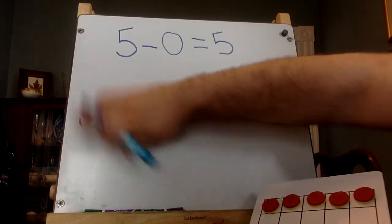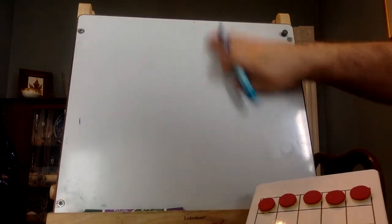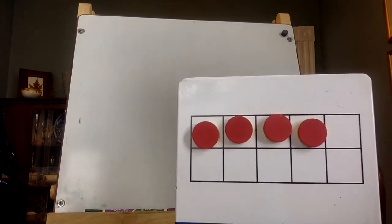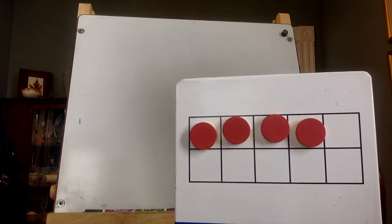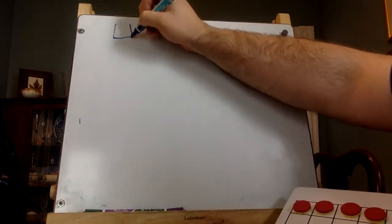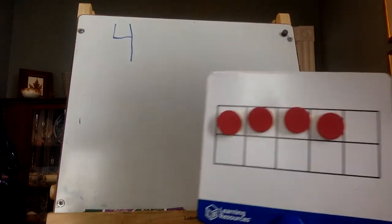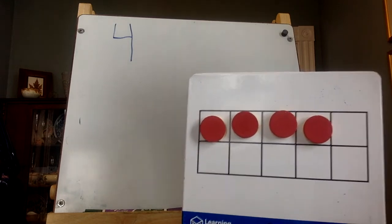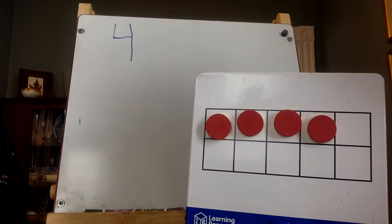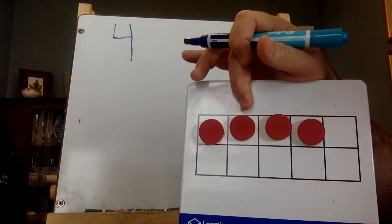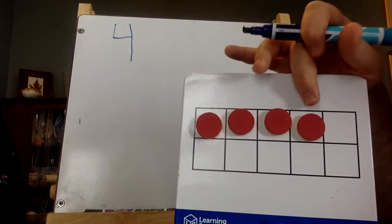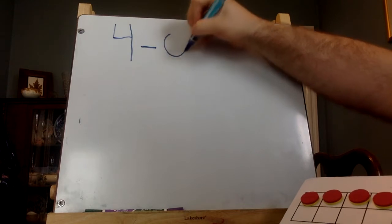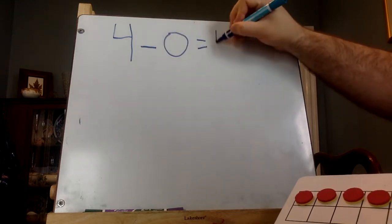Let's do that again. Let's try it with the number four. I have four red dots. How many do I have? Four. I'm going to give zero to my friend. How many do I still have? One, two, three, four. So four minus zero equals four.